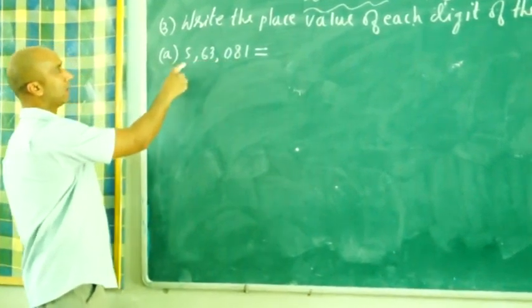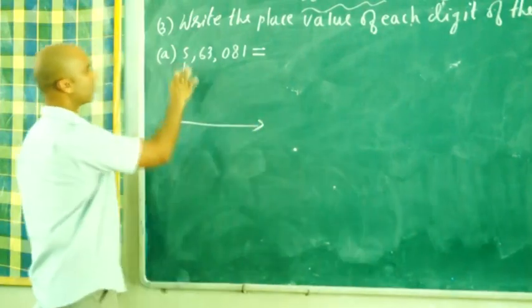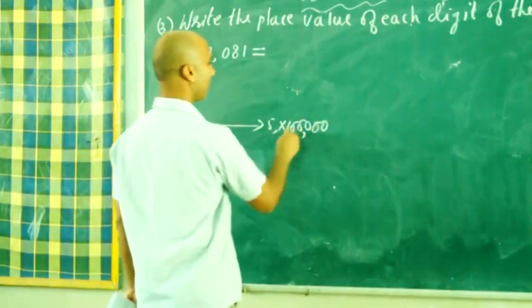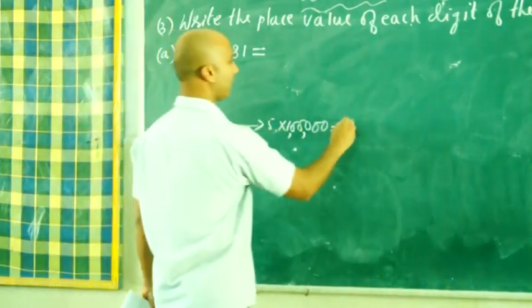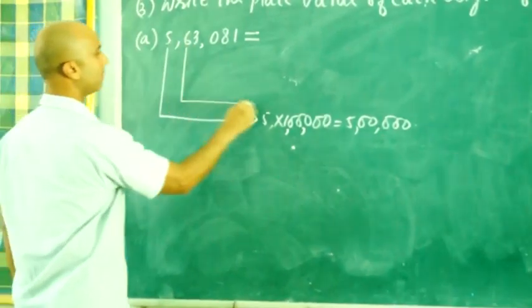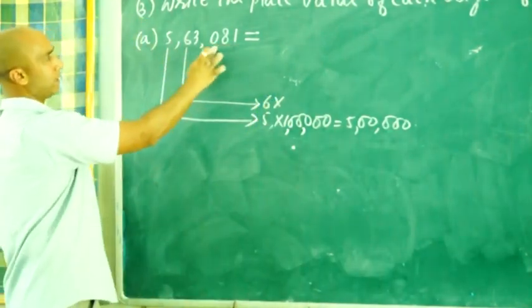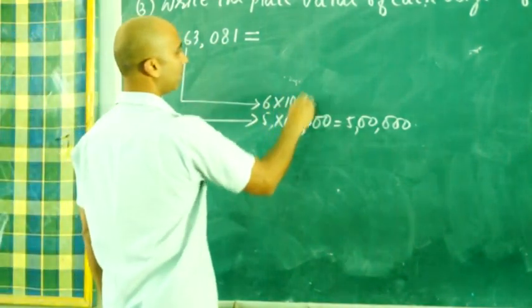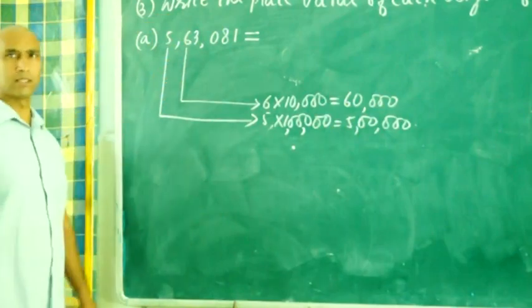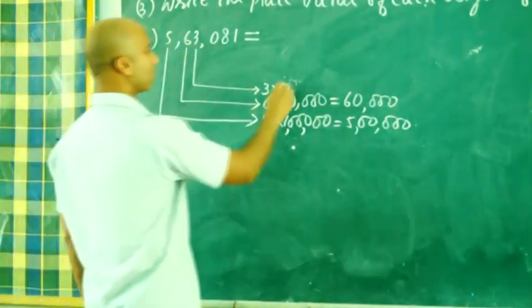That means 1, 8, 0, 3, 6, and 5. So first what you can do is write the place value of 5. Place value of 5 is what? 5 into 1 lakh, so 5 lakh. Then next is 6. 6 is in 1, 10, 100, 1000, 10,000 place. So 6 into 10,000, that is 60,000. Then the place value of 3. So 3 into 1000, that is equal to 3000.